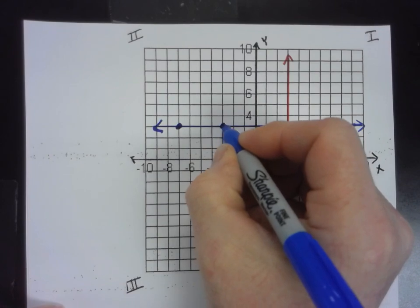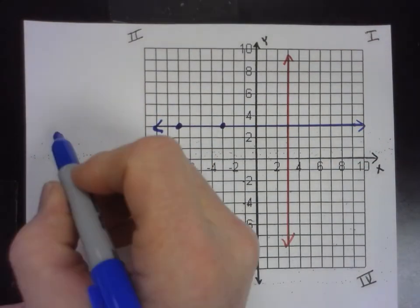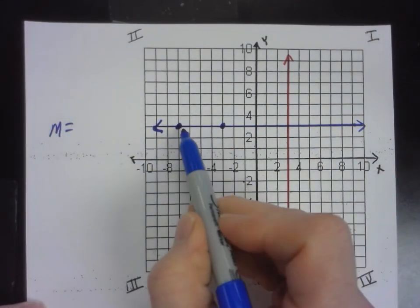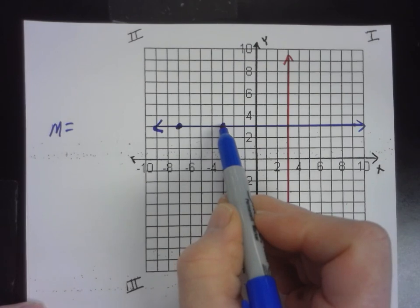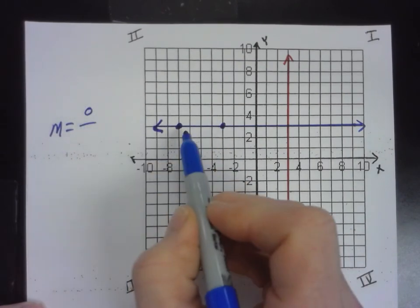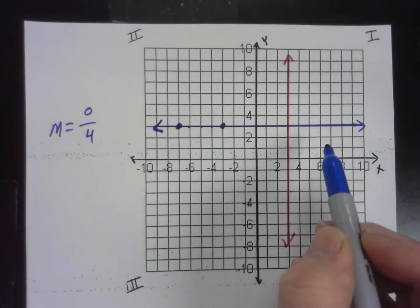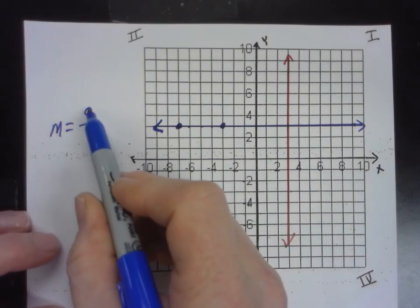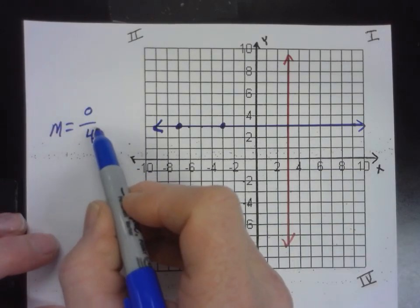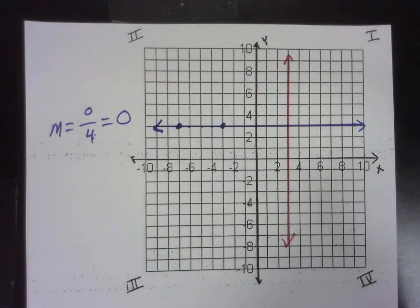If we choose a couple of points on this line, what's the rise? And the run is one, two, three, four. Now you could choose different points, but every single time, what's the rise going to be? Zero. And zero divided by any number is zero. It has zero slope. So it's not going up. It's not going down. Does that make sense to everybody?